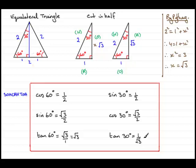One other point: if you check this on your calculator, it may rationalise the result. That means multiplying top and bottom by root 3 — giving root 3 over 3 — rather than showing 1 over root 3. But as I say, learn to work with the triangle and you can find these values yourself.